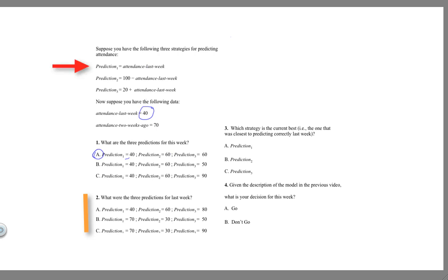So prediction one says attendance last week. Well, that would have been 70, because it was the week before the week we're predicting. So prediction one is 70.